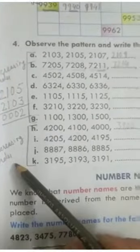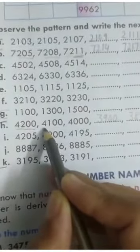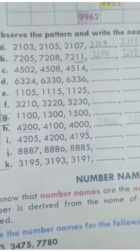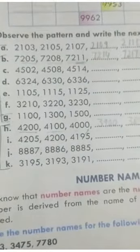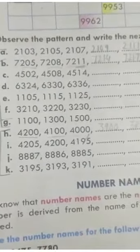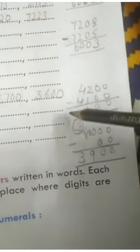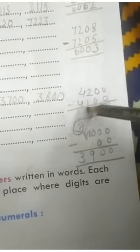Now let us see one more example. The first number is 4,200, the second is 4,100, then 4,000 — the number is decreasing. Write the bigger number 4,200 on top and smaller 4,100 below, then subtract: the difference is 100. So this is skip counting by 100.